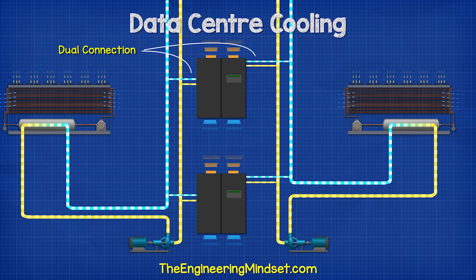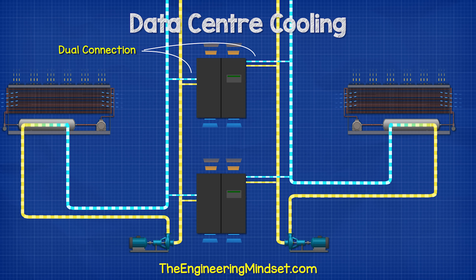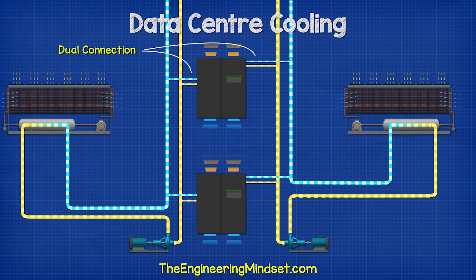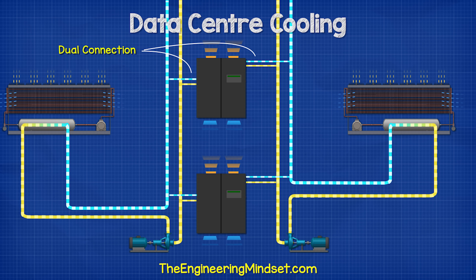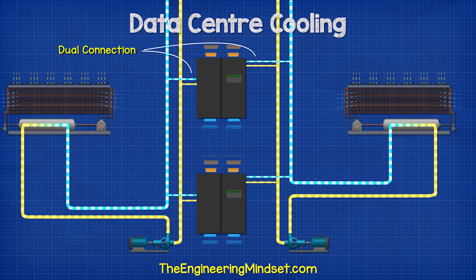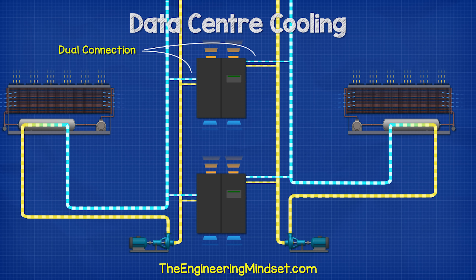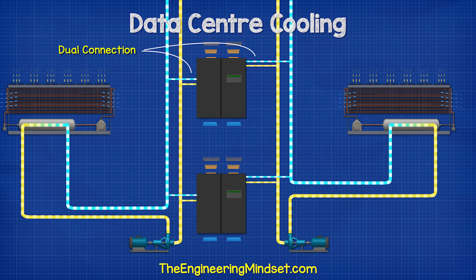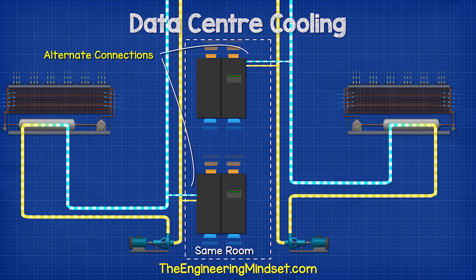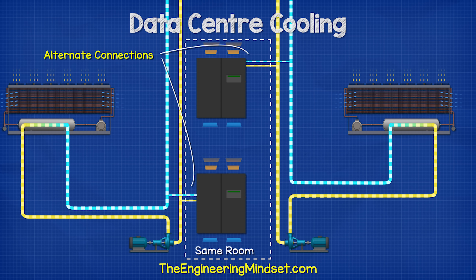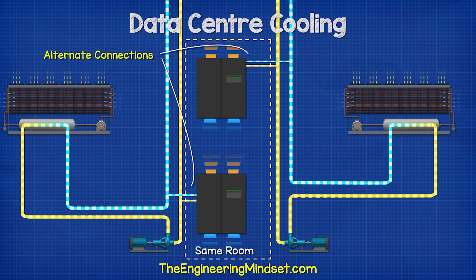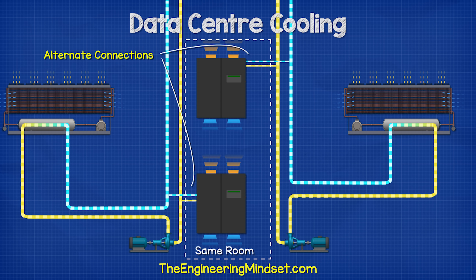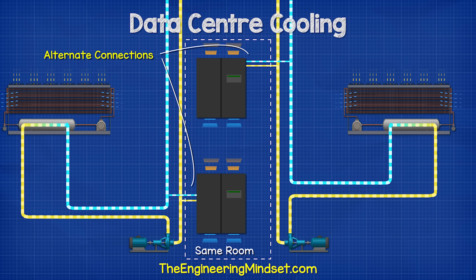Some CRAC units will be connected to multiple cooling systems to ensure there is always cooling available, even if one unit was to fail. Some data centers also connect alternate CRAC units to different cooling systems to ensure resilience.